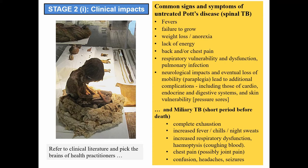Symptoms of untreated spinal TB include fever, anorexia, weight loss, failure to grow, exhaustion, and pain. Over time, mechanical restrictions from vertebral damage reduce respiratory function. As neurological impacts of Pott's disease reduced his mobility, the Nazca boy faced the range of well-known immobility-related problems: challenges to cardiovascular, endocrine, and digestive functions, and potentially lethal pressure sores that accrue when people are bedridden. The symptoms of active blood-borne TB are much the same as those of Pott's disease, but considerably more severe.